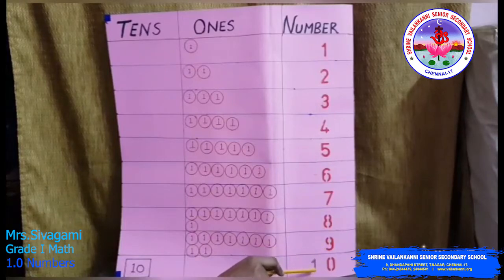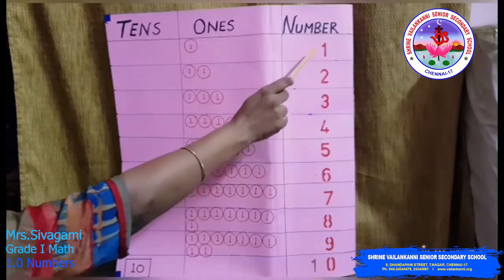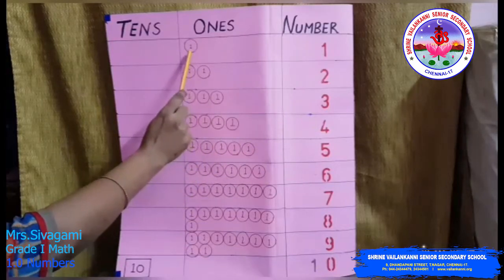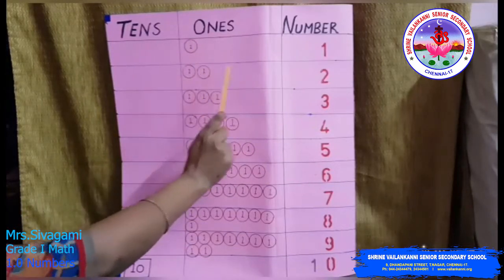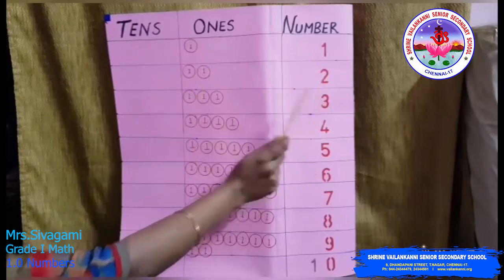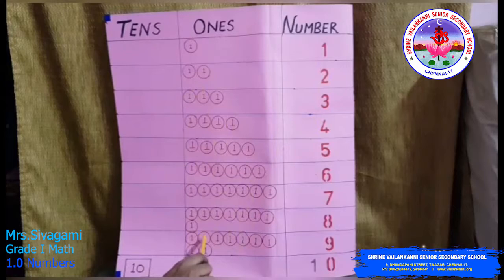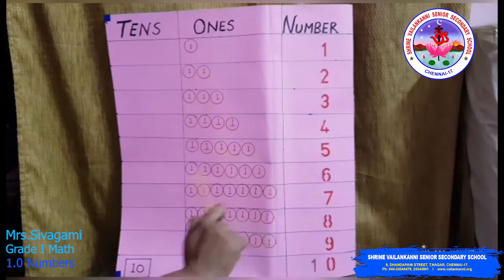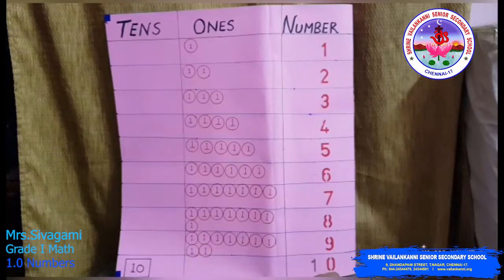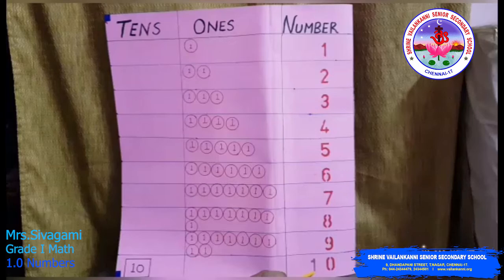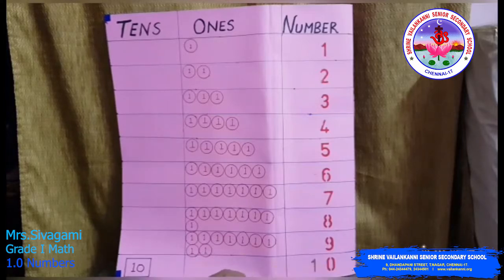10 alone is a double digit number. The number 1 is made of 1 one, 2 ones make 2, 3 ones make 3, 4 ones make 4, and so on — 9 ones make 9, 10 ones make 10. As I already told you, 10 is a two digit number. This is the 1's place and this is the 10's place. In the 1's place there is 0, and in the 10's place there is 1.